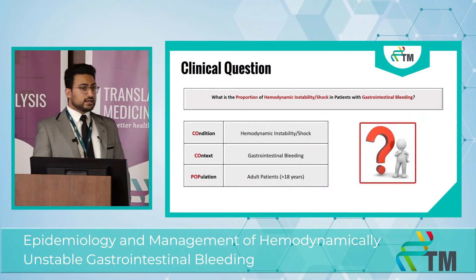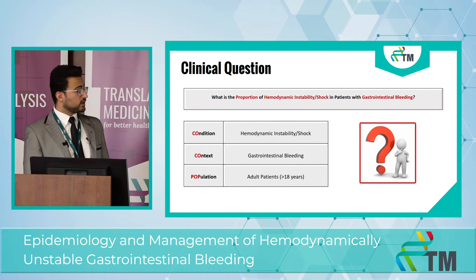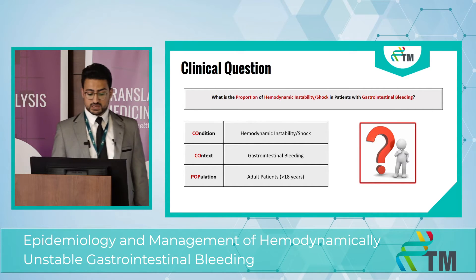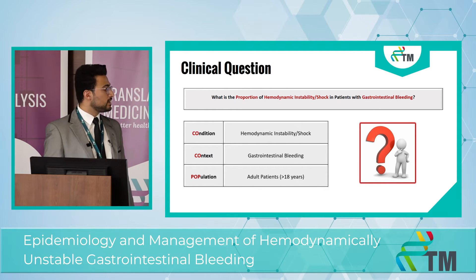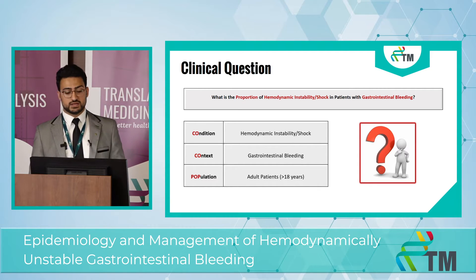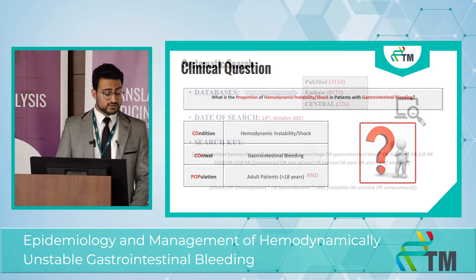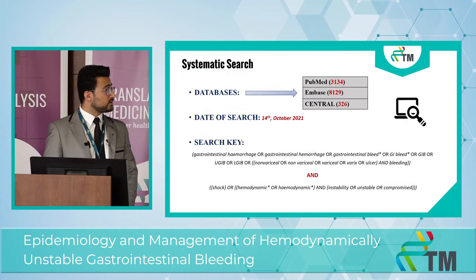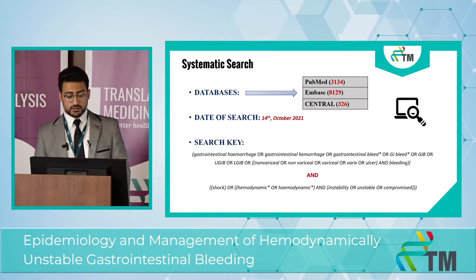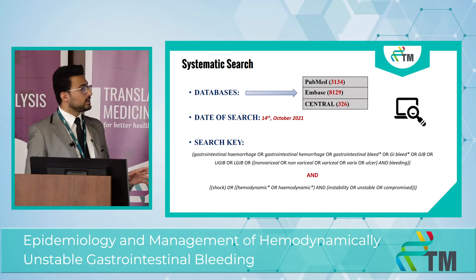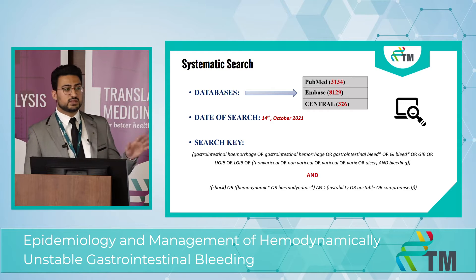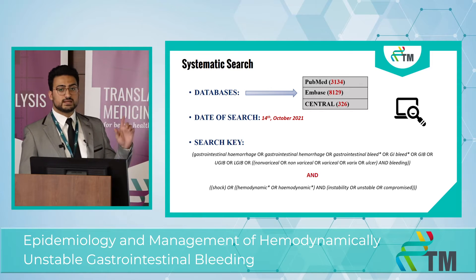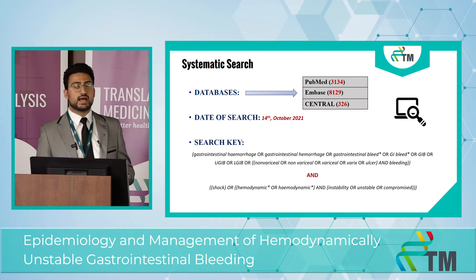For our clinical questions, we used the COCOPUB framework. The condition is hemodynamic instability, the context is gastrointestinal bleeding, and the population is adult patients over 18 years old. We conducted a systematic search in three main databases on 14th October last year. Our search key consists of two main concepts: gastrointestinal bleeding with different sources, and hemodynamic instability and shock.